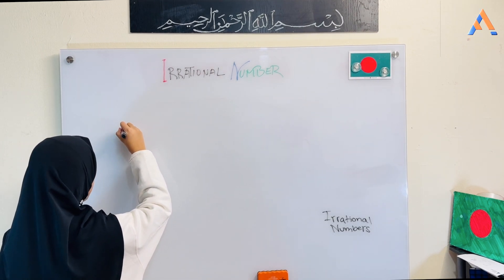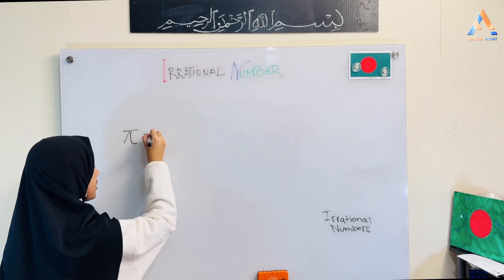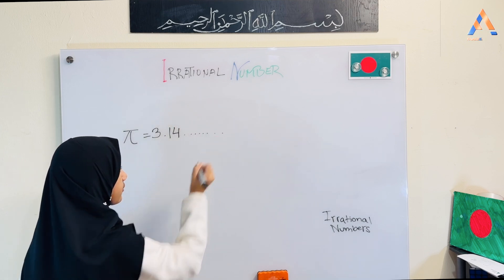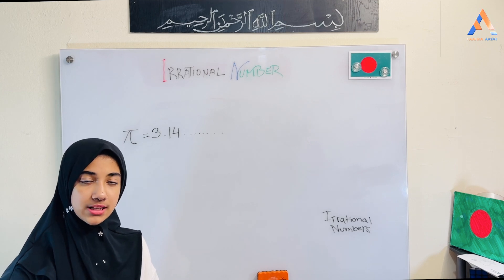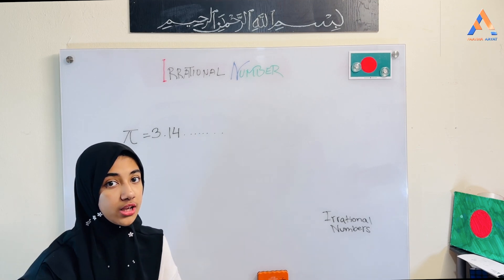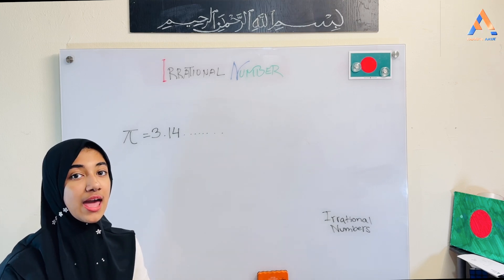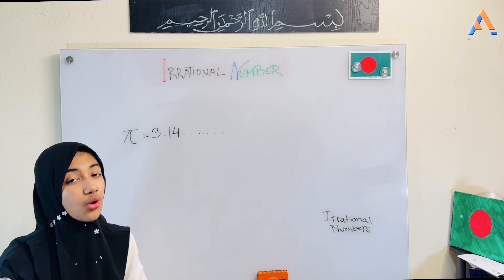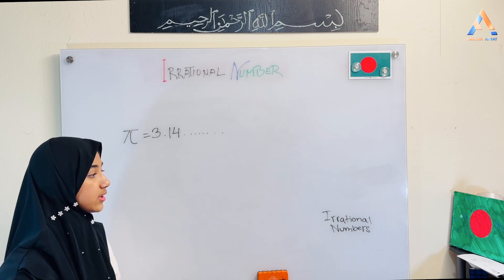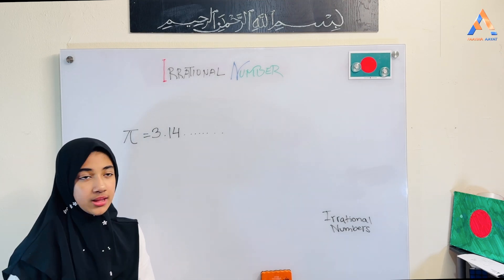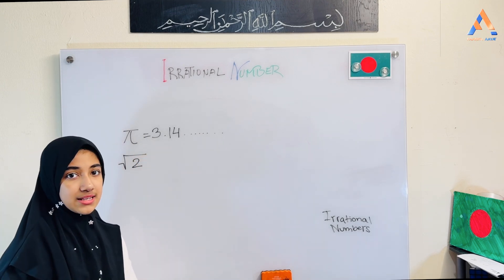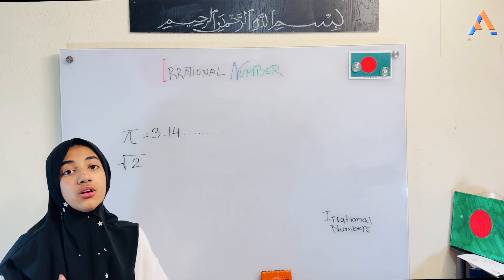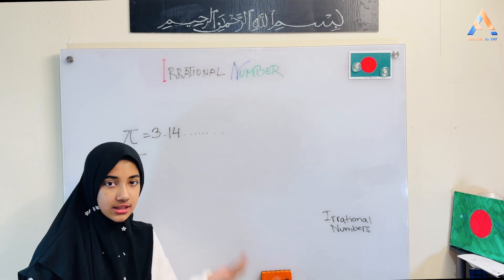For example, pi — we give it as 3.14 and then it goes on forever. Pi is neither terminating nor recurring, so it is an irrational number. Similarly, root 2 is neither terminating nor recurring, so root 2 is also an irrational number.